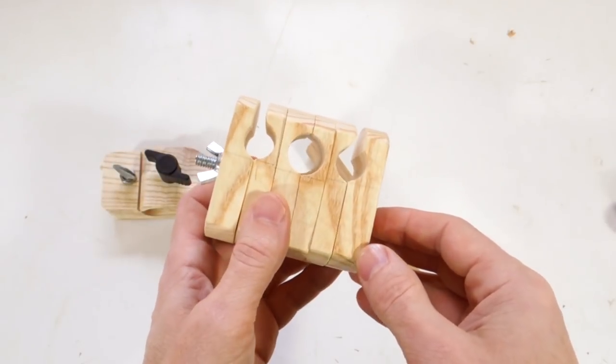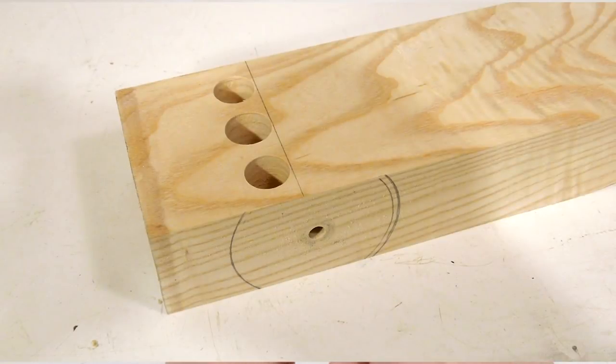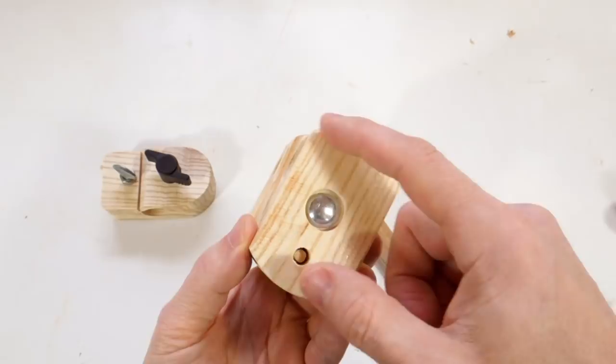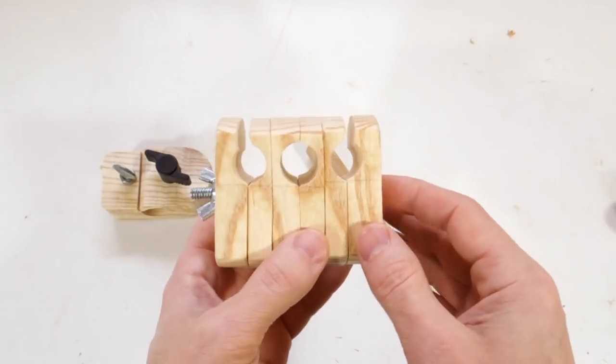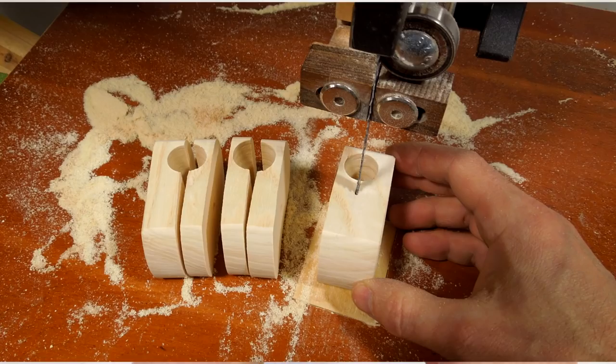So the way I built this thing is I started with a block of wood and drilled three holes into it. And then cut it round on here, drilled another hole through here, and then sliced that on the bandsaw.